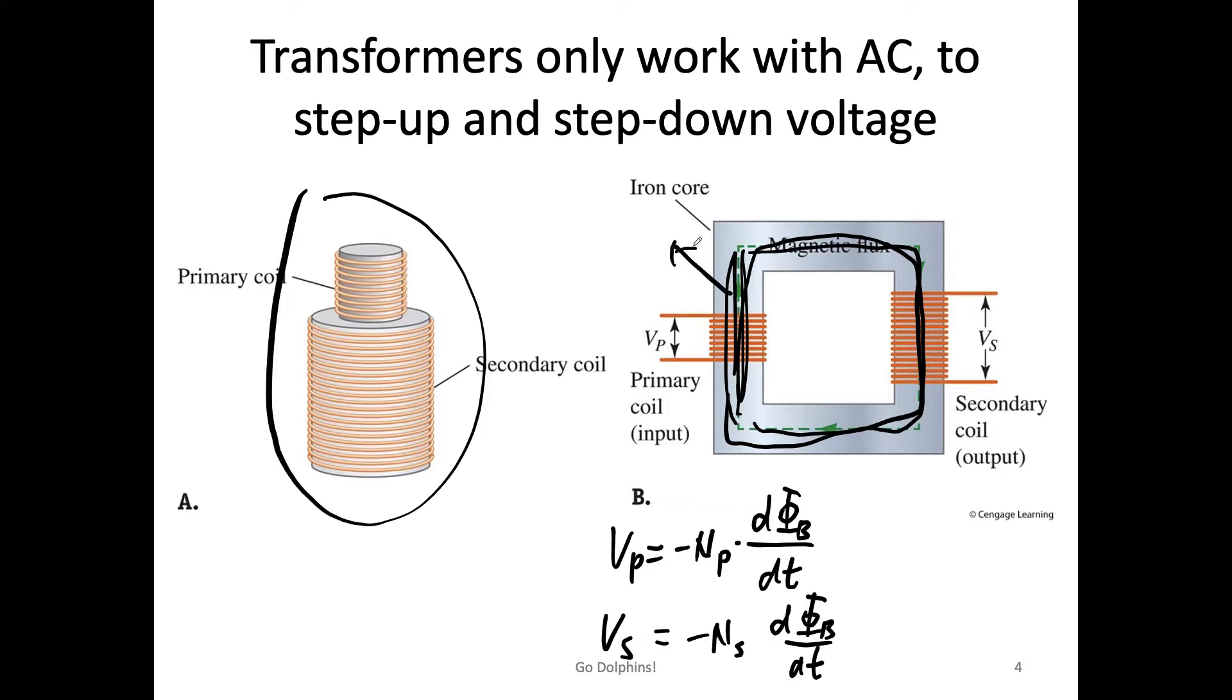And as we said, dΦ_B/dt and dΦ_B/dt at those two coils should be the same. So we can immediately figure out that this and this are the same. So we can immediately find out V_P/V_S equals N_P/N_S.